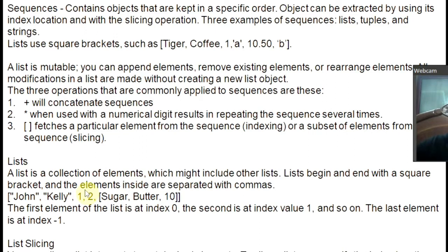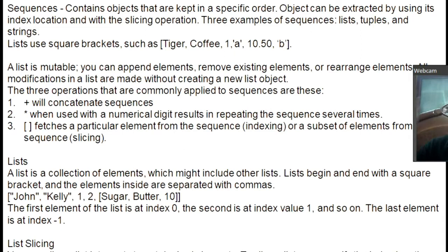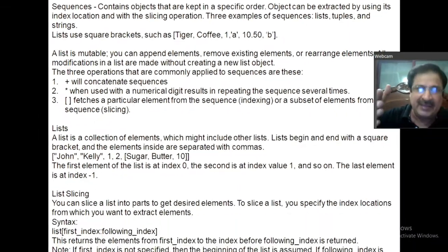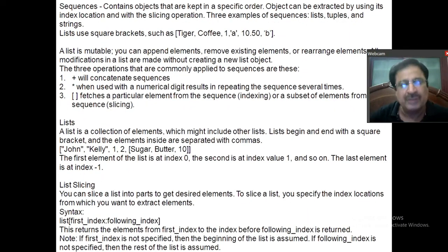Out of the three sequences — tuples, strings, and lists — strings and tuples are immutable. That means you cannot change the original string or tuple; you have to make a copy and make changes to that. But lists are mutable — you can make changes to the original list itself. You can apply three operations on all three sequences: use the plus operator to add two sequences, use the multiplier to repeat a sequence, and to access any element, use its index location enclosed in square brackets, just as in numerical arrays. I recommend watching the numerical arrays lecture first — a link is provided in the description box. The rest of the theory on extracting and slicing we will cover practically.